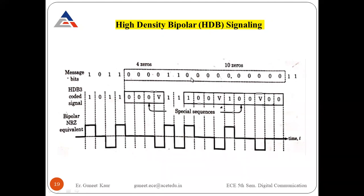Looking at the waveform, we have a sequence containing ten zeros with four consecutive zeros. Since N equals 3, if there are more than three consecutive zeros, a special sequence must be added. In the message bits, when a minimum of N+1 (i.e., four) zeros occur — with a maximum of ten zeros in this case — they can be replaced by a special sequence of length N+1.